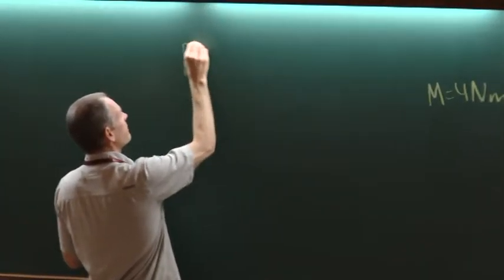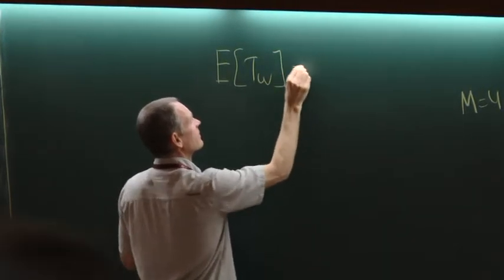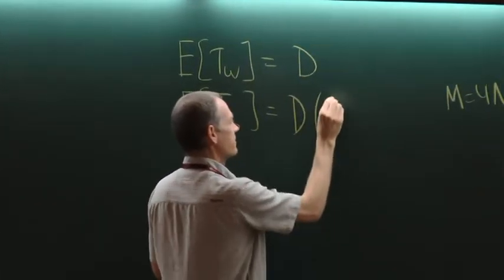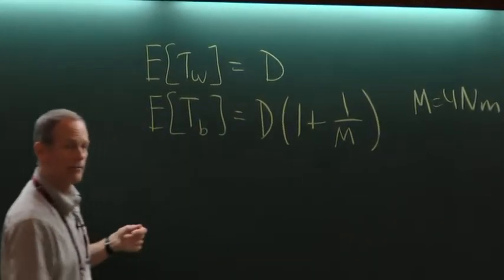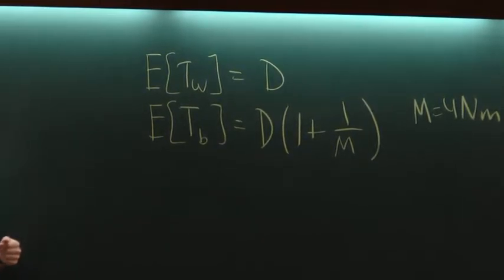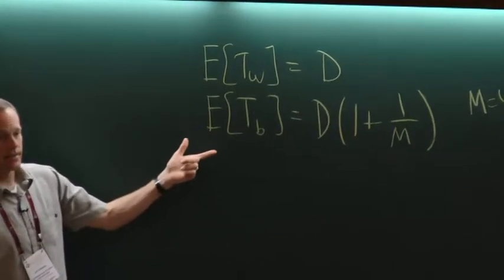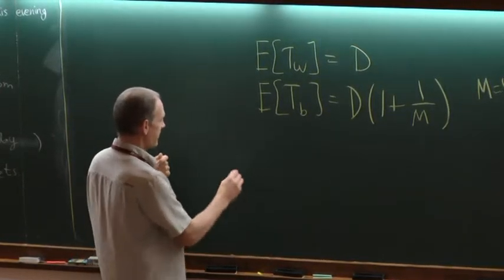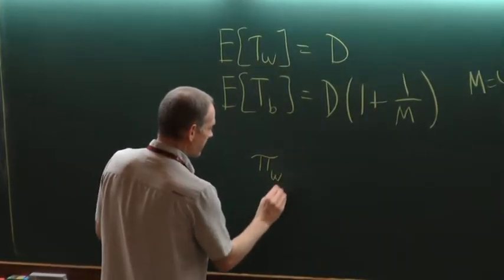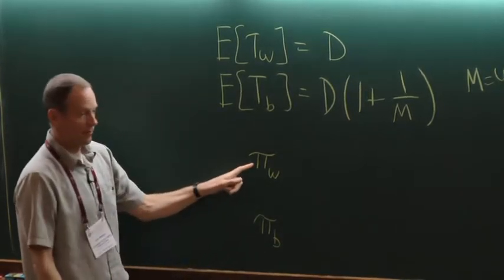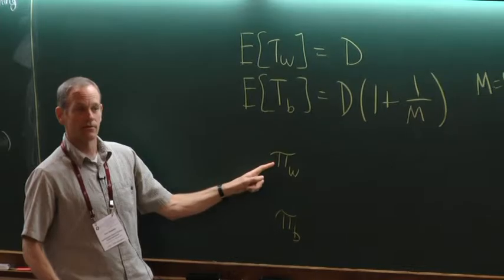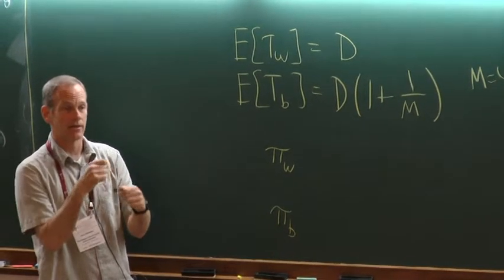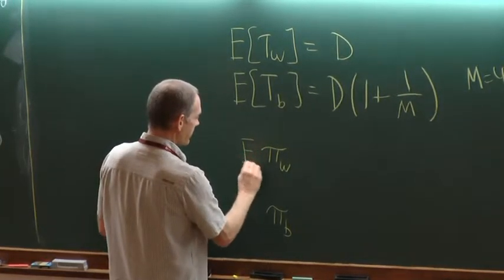Yesterday I derived formulas for the average pairwise coalescence times within and between populations. What I didn't say — but meant to — is that I can easily convert these into predictions for average numbers of pairwise differences within and between populations. So I'm going within my subpopulation sample and taking all pairwise differences, averaging over subpopulations if I want, and then between populations taking all pairs, counting the number of differences, and taking the average.